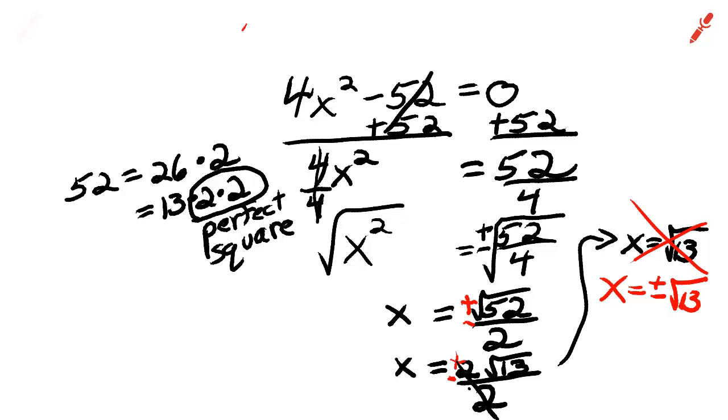And this was called the square root method, the square root method, because we took the square root of both sides.